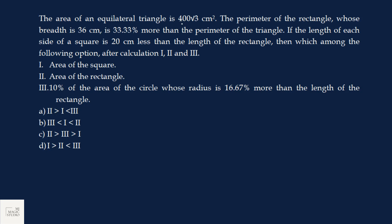The area of an equilateral triangle is 400 root 3 centimeter square. Area of equilateral triangle is root 3 by 4 side square which equals 400 root 3. That means, A square is 1600. Side of an equilateral triangle is 40. The perimeter of the rectangle. Oh, we have a rectangle whose breadth is 36 centimeter. 36 is 33.33 percent more than the perimeter of the triangle.